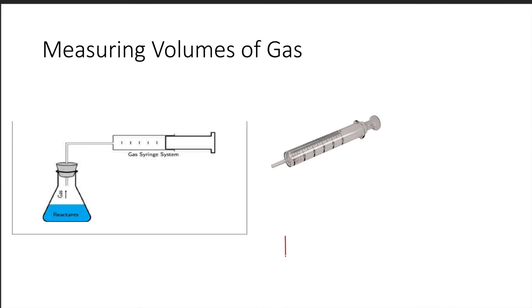For measuring volumes of gases, we use the gas syringe. You need to know how to draw it, along with simple tubing and rubber bungs to connect it to your apparatus.